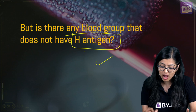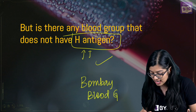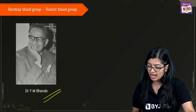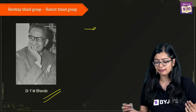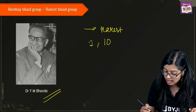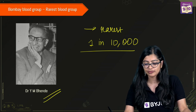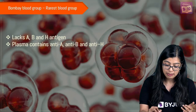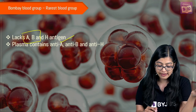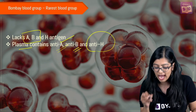However, there are some individuals who do not have this antigen H. Such people without antigen H are who we call the Bombay blood group. This is a very unique blood group. It was discovered by Dr. YM Bhande in Bombay, hence the name. It is one of the rarest blood groups — one in 10,000 people have this particular blood group. Because it lacks the H antigen, it also lacks A and B antigens, and it will have anti-A, anti-B, and anti-H antibodies in the plasma.